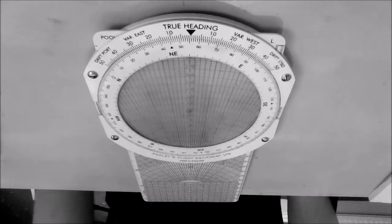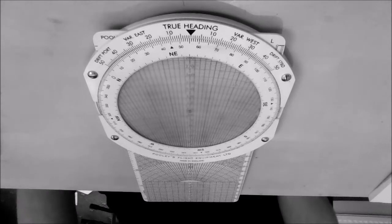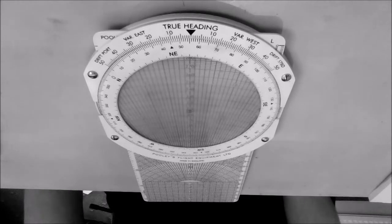So in this question we've got a true track of 048, TAS of 210 knots, and the wind is 350 at 30 knots.